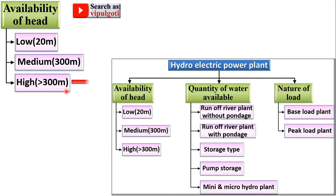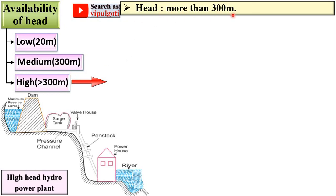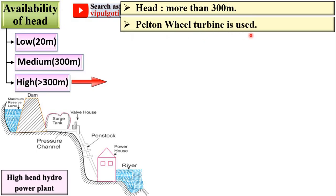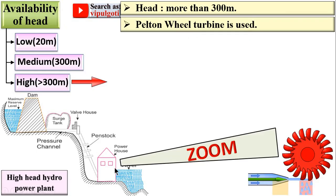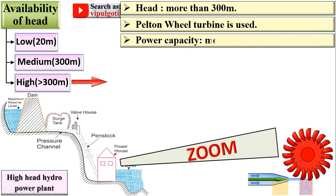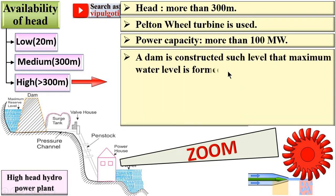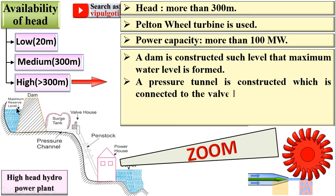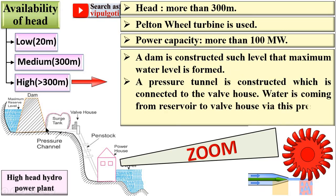For the high head power plant, the head is more than 300 meters and a Pelton wheel turbine is used. Inside the powerhouse you can see the Pelton wheel. Power capacity is more than 100 megawatts. The dam is constructed to form a maximum water level. A pressure tunnel is constructed connected to the valve house, and water flows from the reservoir through the pressure tunnel to the valve house, then through the penstock to the powerhouse.